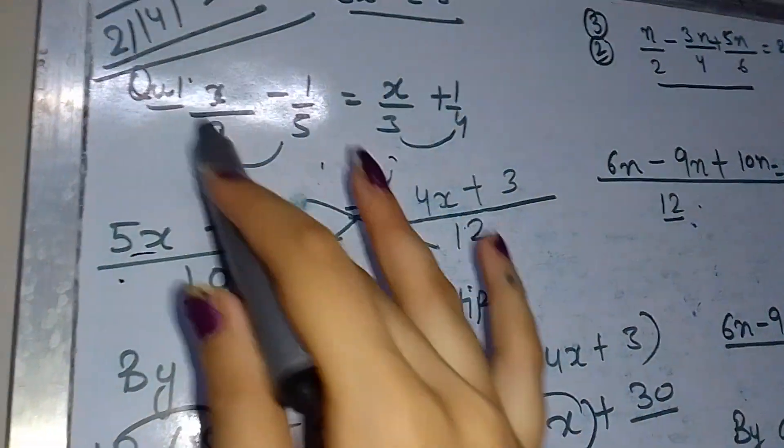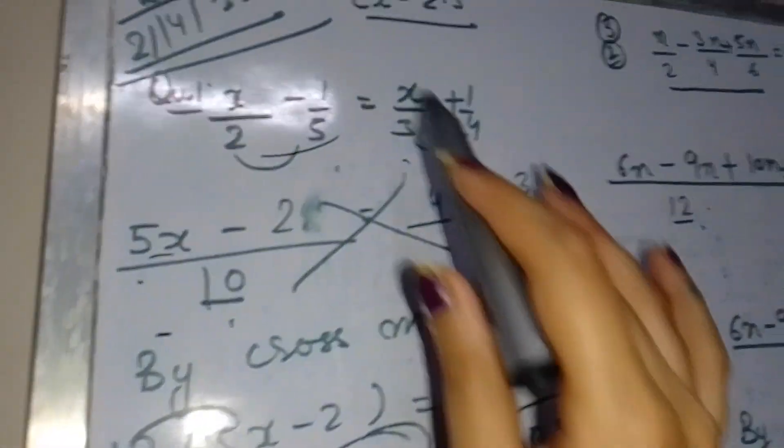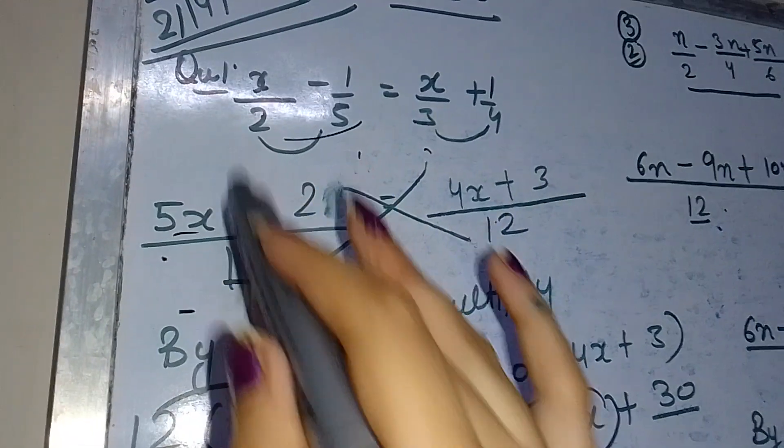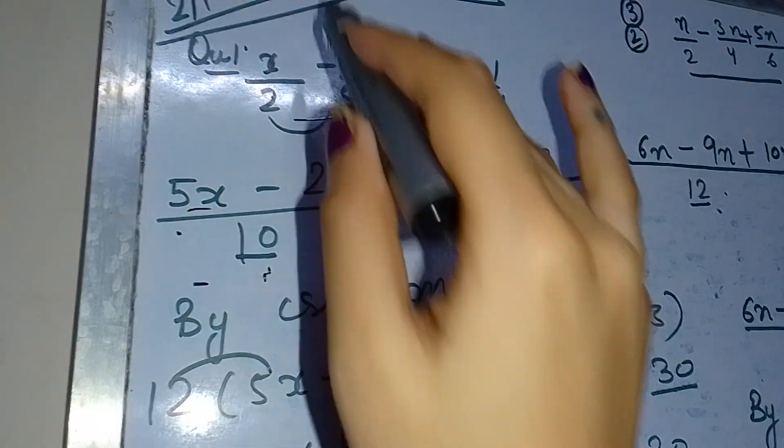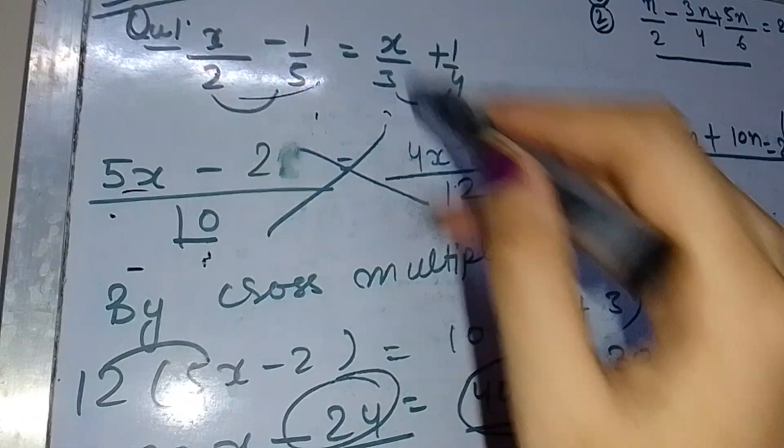The LCM of 2 and 5 is 10, and the LCM of 3 and 4 is 12. Converting the fractions, we get 5x minus 2 over 10 equals 4x plus 3 over 12. Now cross multiply.